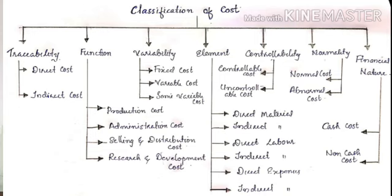On the basis of element — that means element-wise classification — cost may be classified into material cost, labor cost, and expenses. Material may be again classified into direct material and indirect material. Labor may again be classified into direct labor and indirect labor. Expenses are also classified into direct expenses and indirect expenses.